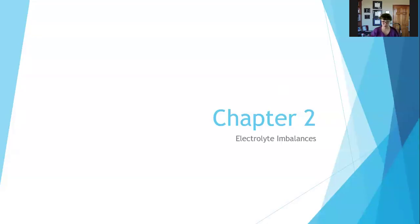The second piece of the puzzle in chapter two is electrolyte imbalances. I'm going to divide this up into sodium and potassium, which are the major ones, and then other ones. I have a few case studies that we'll look at, and some acid-base case studies as well.